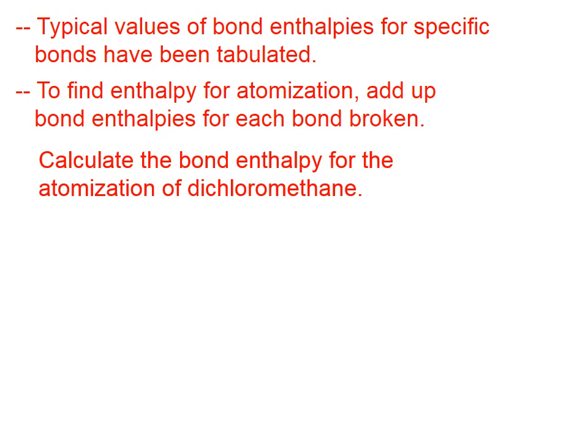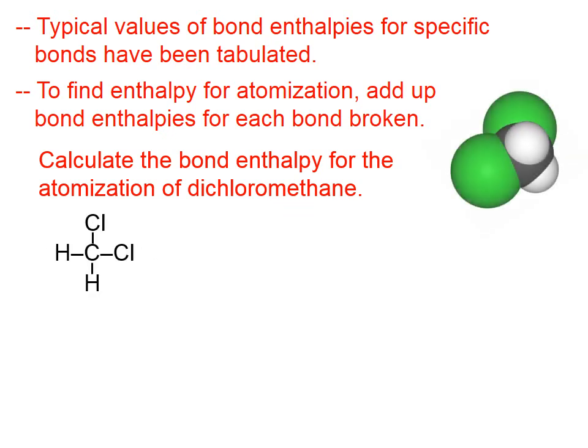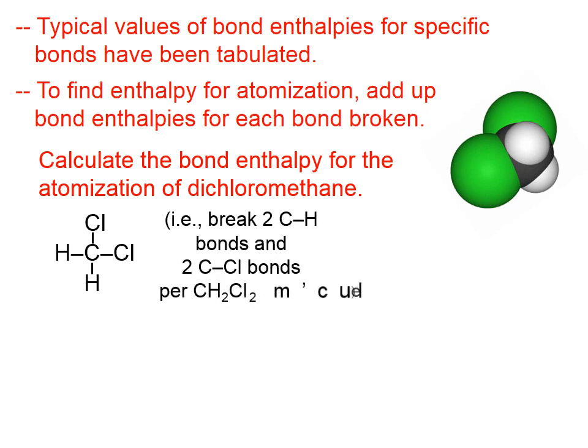Let's calculate the bond enthalpy for the atomization of dichloromethane. From the name, you might predict that there are two chlorines, and the 'meth' stem suggests one carbon, so dichloromethane has that formula. In order to atomize this, we're going to need to break two carbon-hydrogen bonds and two carbon-chlorine bonds for every dichloromethane molecule.